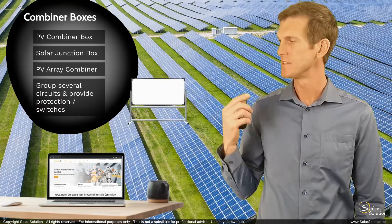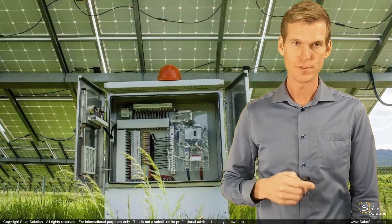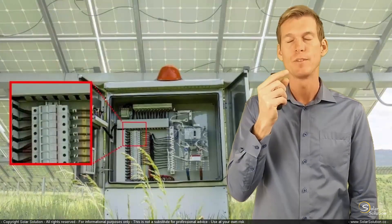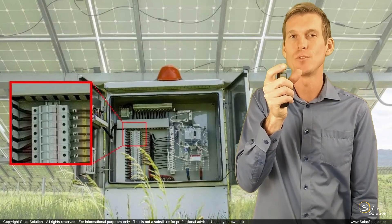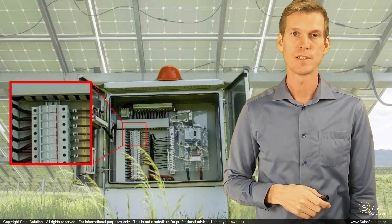Let's look at an example of a combiner box. In the combiner box, you can see some of the components we just ran through. You can see the fuses - well, you can see the fuse holders. When you open this up, you can replace a fuse if it's burned out.